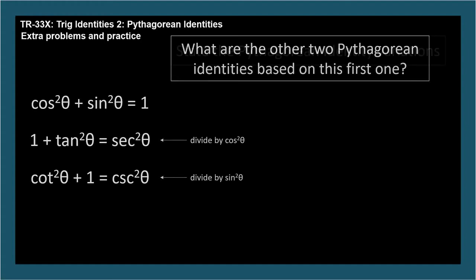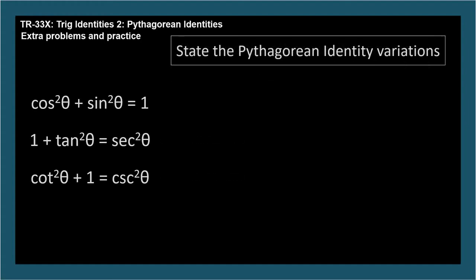State the Pythagorean identity variations. For the variations, simply isolate different terms. I like to start with the first term and isolate it. Then isolate the second term.